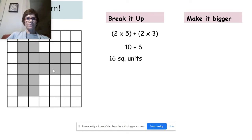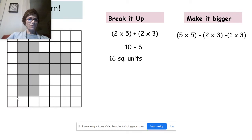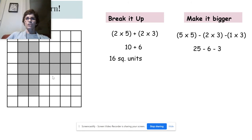If you make it bigger, it was 5 times 5. Let me check: 5 times 5 is 25, and then you have to take away this rectangle — 2 times 3. So 25 minus 6, which is 19, and then minus 3 is 16 square units.